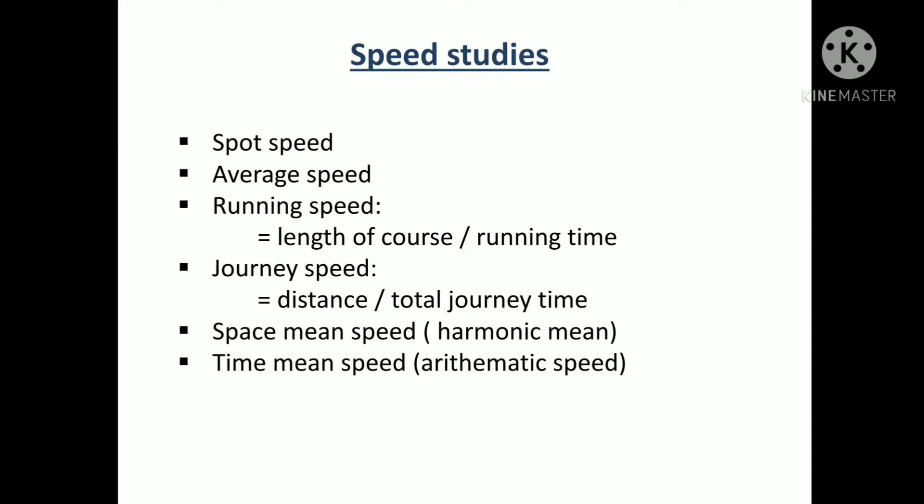Space mean speed, also called the harmonic mean, is the average speed of vehicles over a certain road length at a given instant. Time mean speed, also known as the arithmetic mean, is the mean speed of a vehicle at a point in space over a period of time, or the average of instantaneous speeds of observed vehicles at a spot.